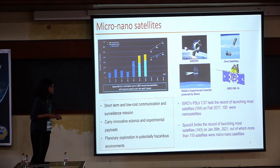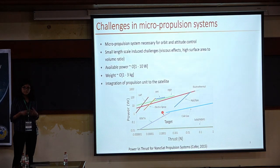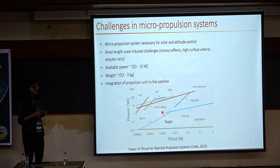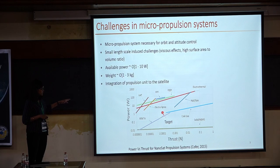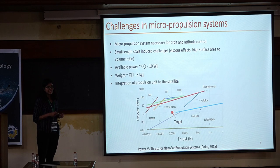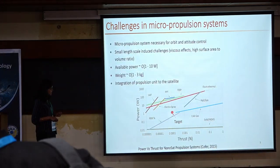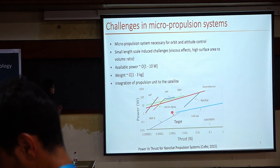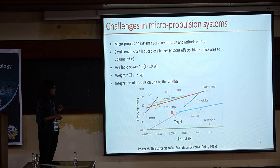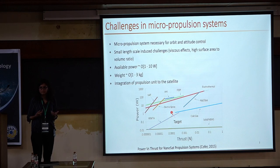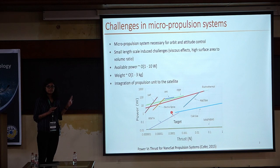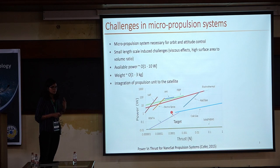ISRO similarly launched 100 nanosatellites in 2017. These nanosatellites come with their own challenges. First is how do you propel them? Because of the small size scale and small power requirement — on the order of 1 to 10 Watts — conventional propulsion systems cannot be integrated with these nanosatellites. We need a micro propulsion system. Our goal is to develop a technology which can produce 100 micronewton of thrust with 1 Watt of input power.